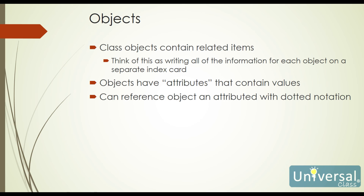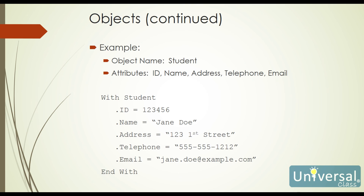We can reference an object with dotted notation. If I have a student with ID 123456, I can reference student.Name, student.Address, and so forth. The object has a name 'student' with attributes like ID, name, address, telephone number, and email. I can reference it as student.ID, student.Name, student.Address. And since we can reference it as student.whatever, we can use the With statement — with the student object, we set .ID to 123456, .Name to Jane Doe, .Address to 123 1st Street, .Telephone and .Email, then End With.